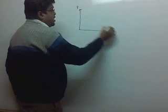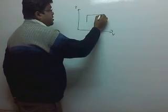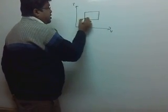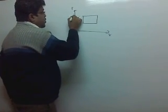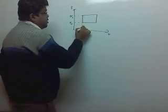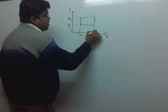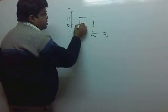Suppose this is a P-V graph for a cyclic process. This is P₀, 2P₀, V₀, 2V₀.